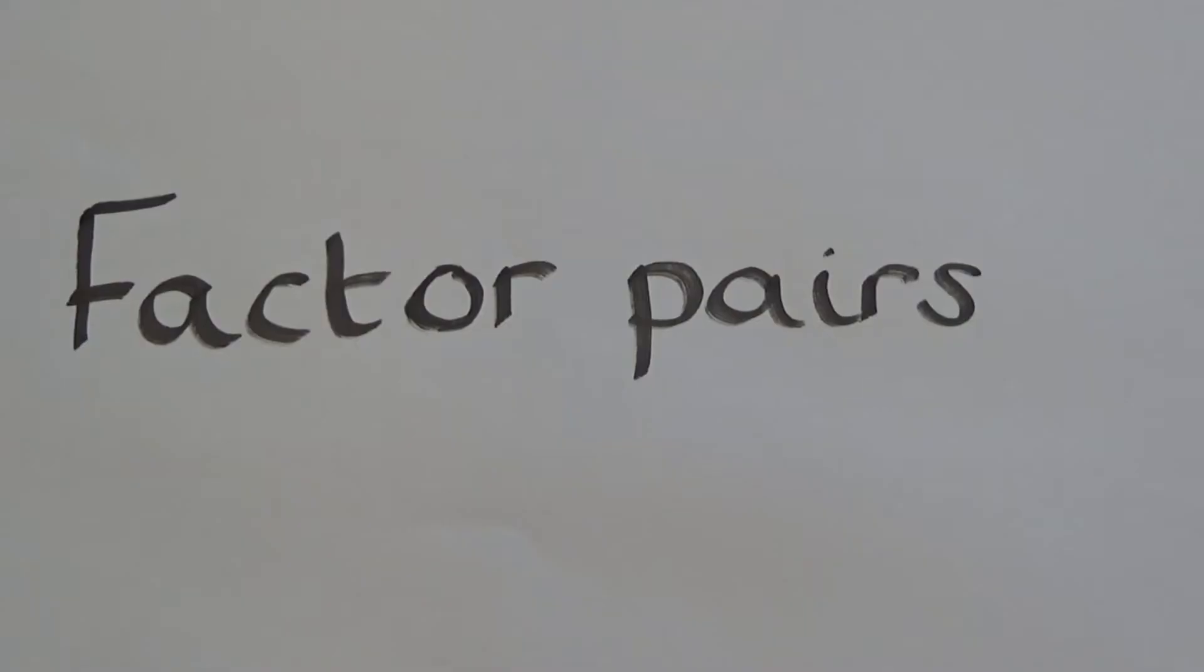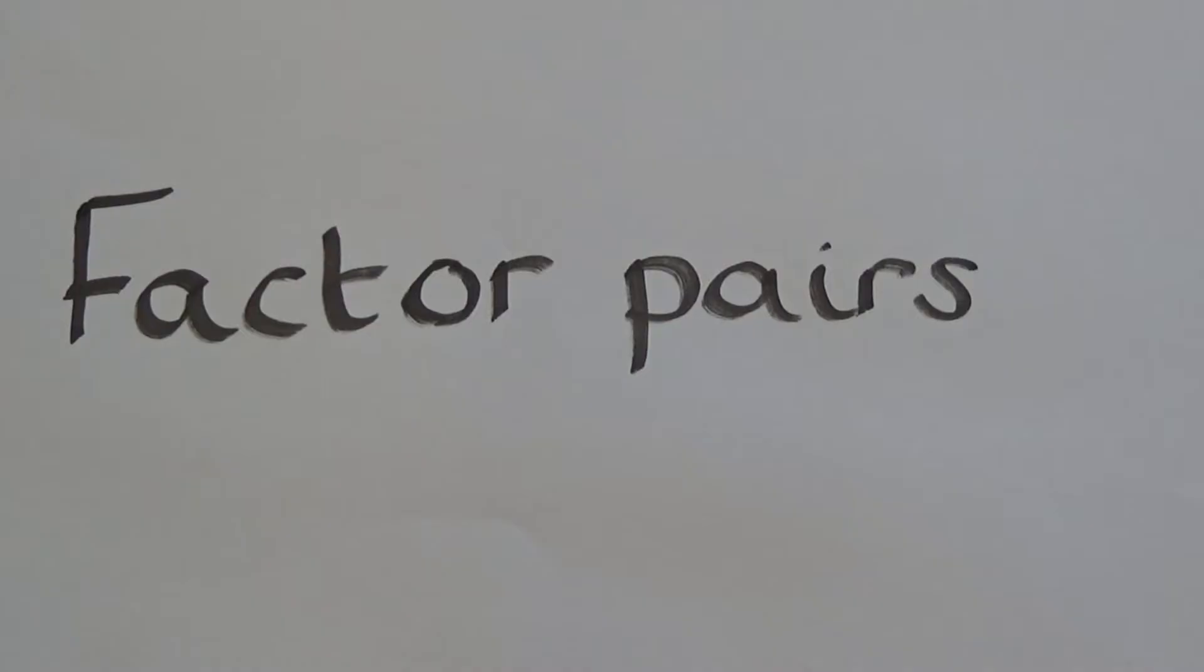Hi everyone, I'm Amber and today we're going to be looking at finding factors of a number. A factor is a number which divides exactly into another number without giving a remainder. Factor pairs are two numbers which multiply together to make a product.